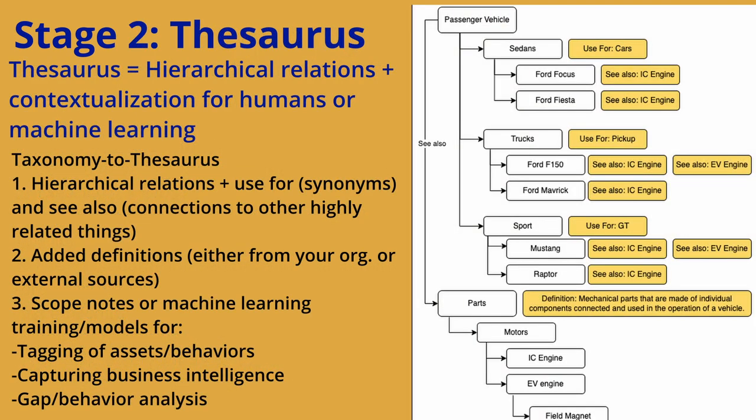Now we're building on top of stage one. Everything that we've developed with our taxonomy — the hierarchy, the types of relations inherent from that hierarchy — are also going to be helpful with the thesaurus. Here we're adding more connective tissue. Every single step in these stages is adding more context, more relations, more metadata to help humans and machines make better decisions. We are now adding things like 'use for' — those are synonyms, and those can be synonyms from different catalogs, different pieces of metadata from different databases, or the natural language of your end user if you're using this for search enhancements.